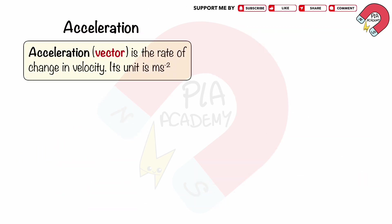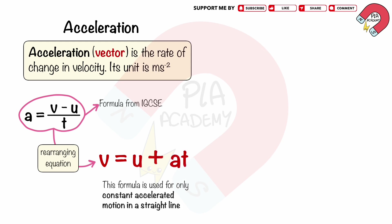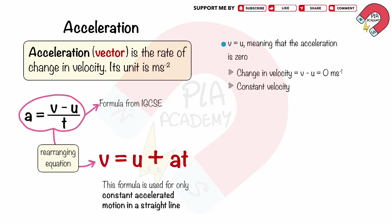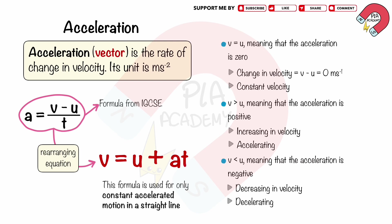Acceleration is the rate of change in velocity. Acceleration is a vector quantity and its unit is meters per second squared. The equation of acceleration is a = (v − u) / t, which can be rearranged as v = u + at. This formula is for constant accelerated motion in a straight line only. When v equals u, acceleration is zero and the object moves with constant velocity. When v is greater than u, acceleration is positive and the object is accelerating. When v is less than u, acceleration is negative and the object is decelerating.